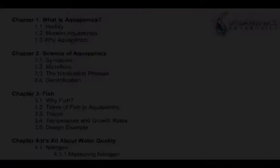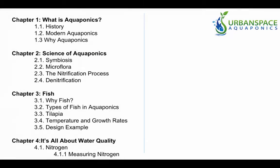The workshop starts with an introduction to aquaponics in Chapter 1, going into its history, the state of modern aquaponics, and then making a case for what makes it a better choice. Chapter 2 discusses the science of aquaponics.